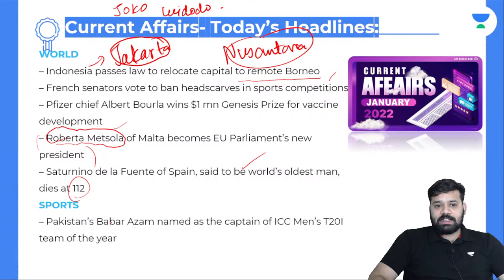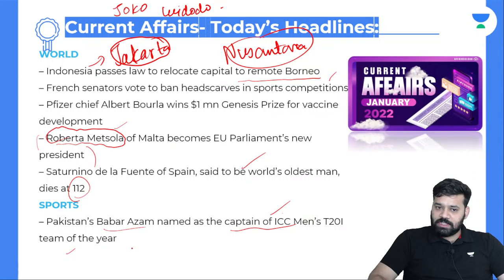Pfizer chief Albert Bourla won a 1 million generous prize for vaccine development. Robert Metzola of Malta became the EU Parliament's new president — the youngest person to hold that position. Saturnino de la Fuente of Spain, said to be the world's oldest man, died at 112 years. In sports, Babar Azam was named captain of Pakistan's men's cricket team.